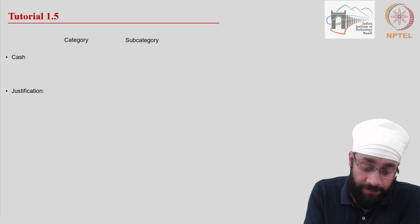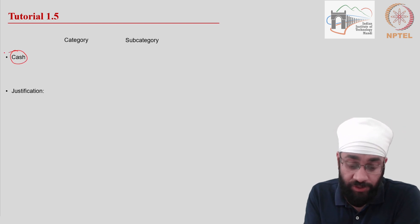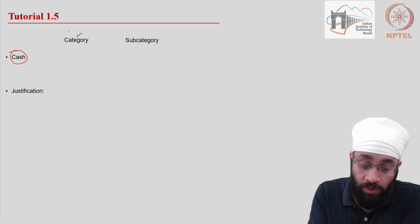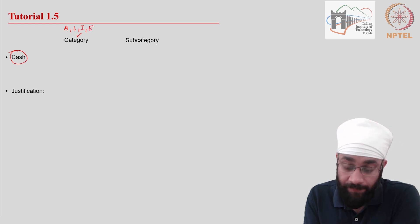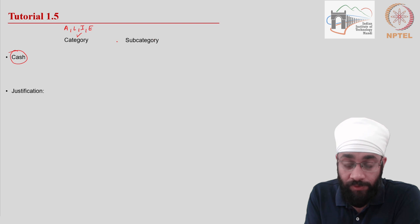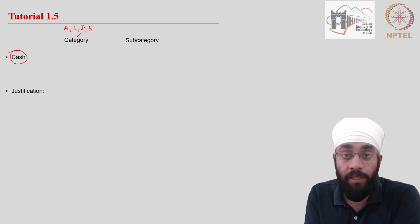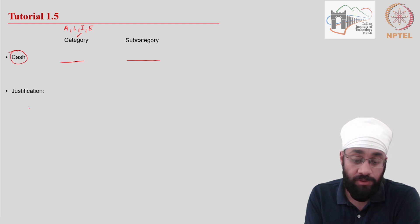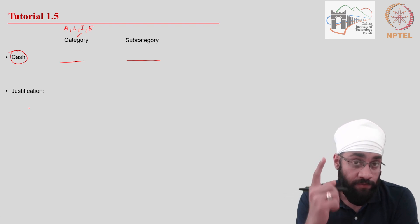The content on the slide is arranged as follows: you have the name of the item of interest — for example, cash — and you have to say which category it belongs to, meaning asset, liability, income, or expense. Then you identify the subcategory: if it is an asset, is it current or non-current? If income, is it operating or non-operating? We then use working notes to justify our answer.